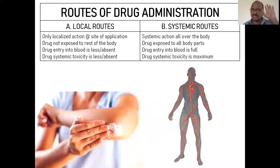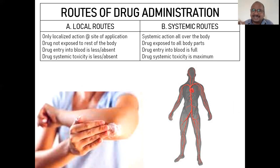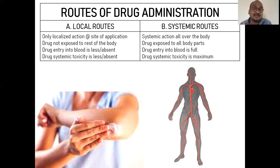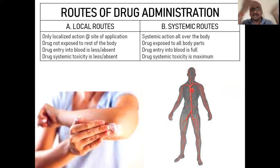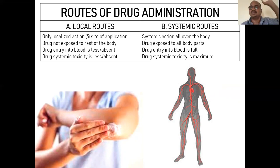All routes of drug administration are classified into two sections: Section A and Section B. In local routes, the drug is restricted to only a particular area of the body and is not exposed throughout the body. In systemic routes, the drug is delivered throughout the body — whether it is necessary or unnecessary, the drug will be roaming throughout. Because the drug is unnecessarily exposed to areas that don't need it, toxicity is higher compared to local routes.